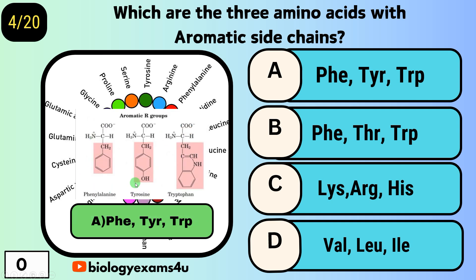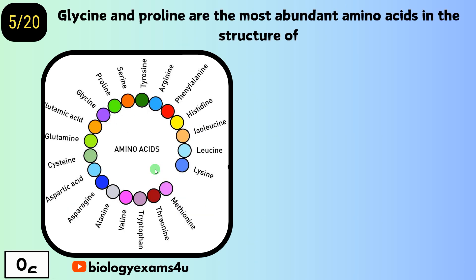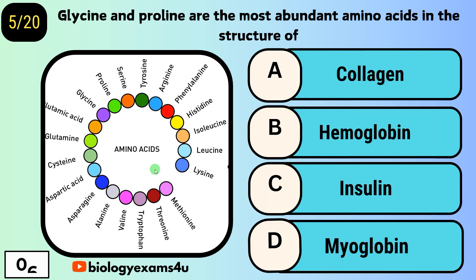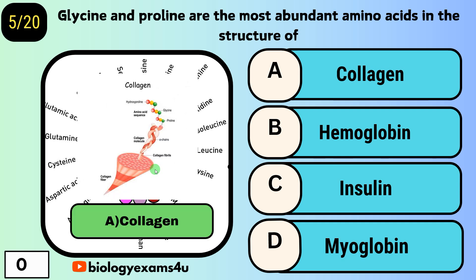As you see here, all these amino acids have an aromatic side chain. Question number five: glycine and proline are the most abundant amino acids in the structure of — option A, collagen; option B, hemoglobin; option C, insulin; option D, myoglobin. The answer is collagen, which is rich in glycine and proline.